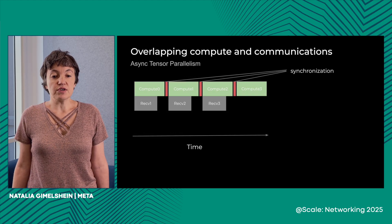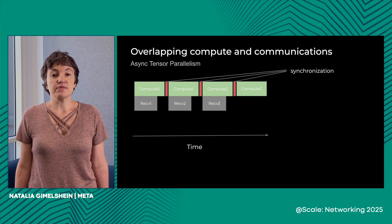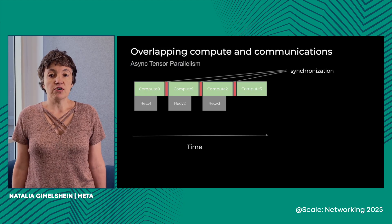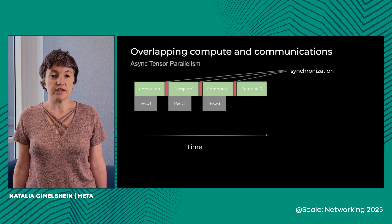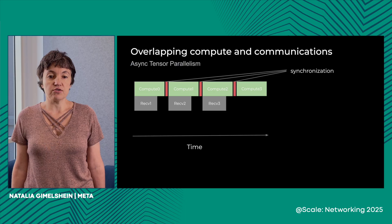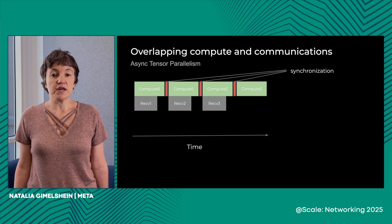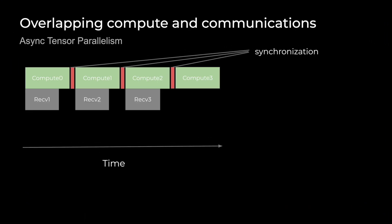We've used symmetric memory to implement an interesting pattern called async tensor parallelism. To recap, tensor parallelism is a common parallelization strategy where the weights of a linear layer are sharded between different GPUs that perform computation simultaneously. Depending on the dimension on which the weights are sharded, you have to either perform all-gather on the inputs before starting computation, or reduce scatter on the outputs. Those communication routines are exposed and can become performance bottlenecks — so how can we make sure they are hidden and not counted in the total end-to-end time?